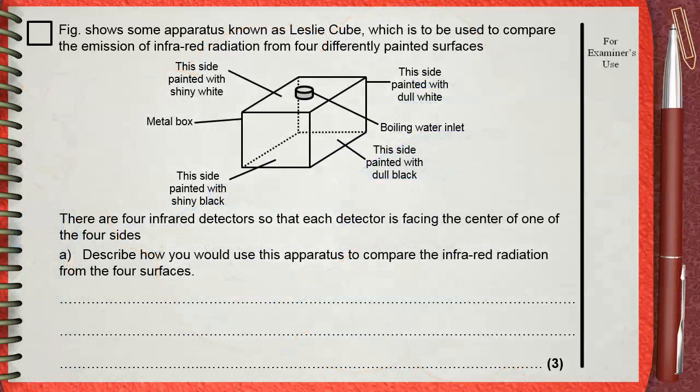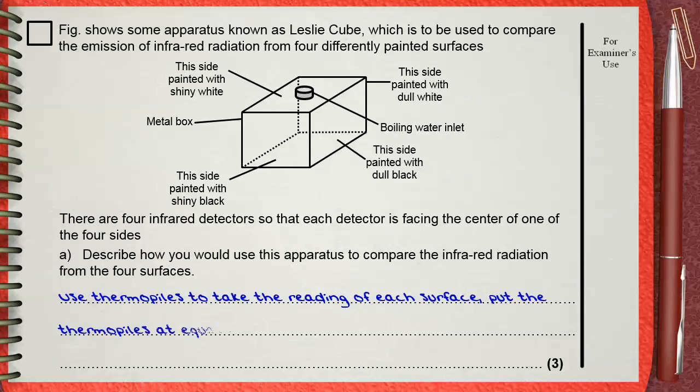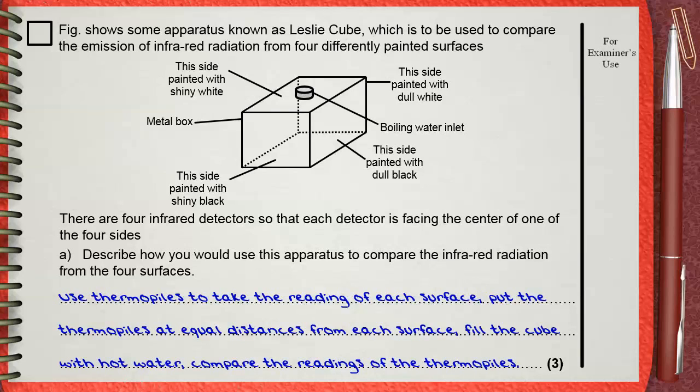Let's answer this. One, use thermopiles to take the reading of each surface. Two, put the thermopiles at equal distances from each surface. Three, fill the cube with hot water. Compare the readings of the thermopiles.